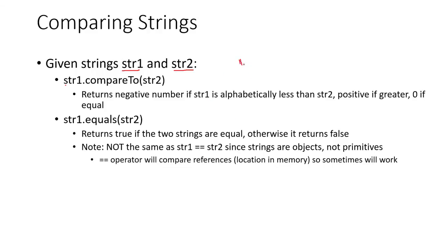So if we are comparing two strings, str1 being 'abc' and str2 is equal to 'def,' str1.compareTo str2 is going to return a negative number. So that would be less than 0 in this example. If they were equal, however, it would just return 0.